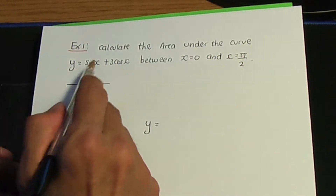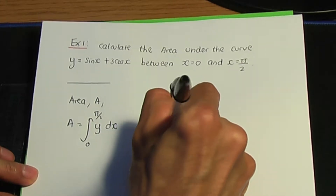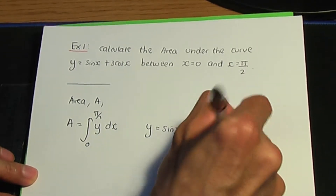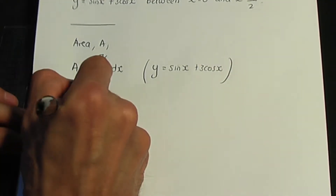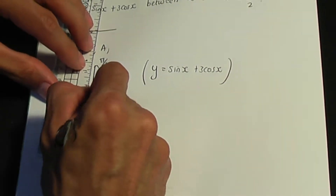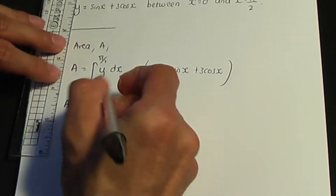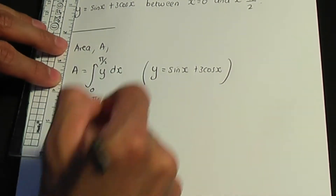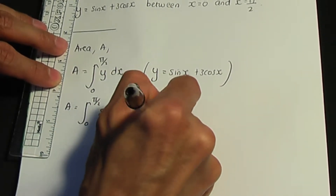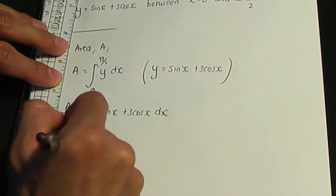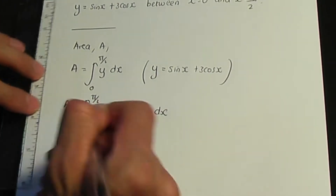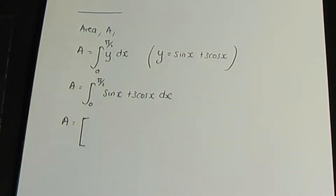y is given — the equation of our curve is sine x plus 3 cos x. So if we replace y in our formula, we're going to integrate between limits zero and pi over two of sine x plus 3 cos x with respect to x.